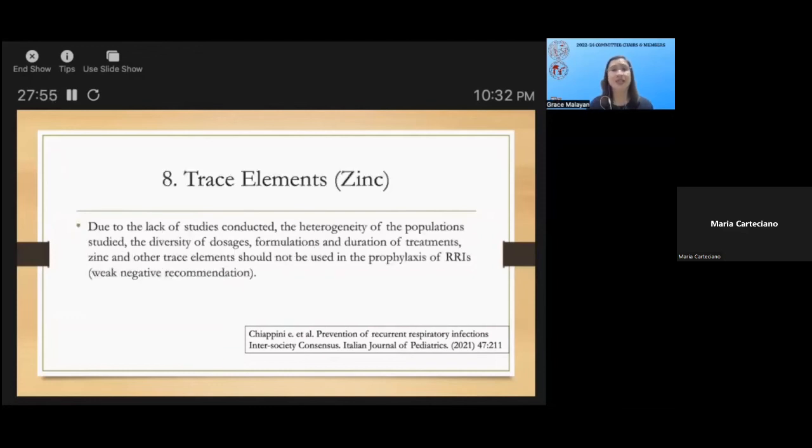What about trace elements in the form of zinc? This has been lengthily discussed by Dr. Sarah Beth a while ago. We know that zinc plays an important role in cell regeneration, immunity, and even growth. Based on the study, there are two schools of thought for the use of trace elements. I would like to discuss first the study by Chiappini et al. They found out that due to the lack of studies conducted, the heterogeneity of the population studied, the diversity of dosages, formulations, and duration of treatments, zinc and other trace elements should not be used in the prophylaxis of recurrent respiratory tract infections.